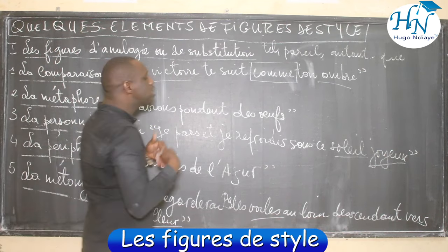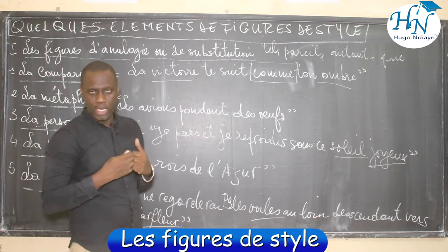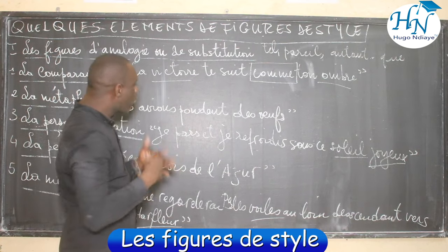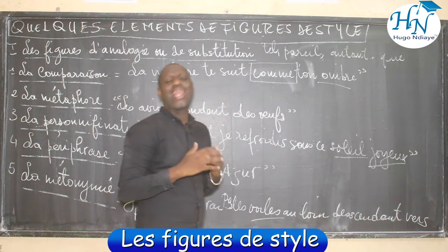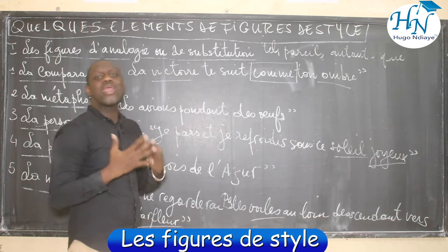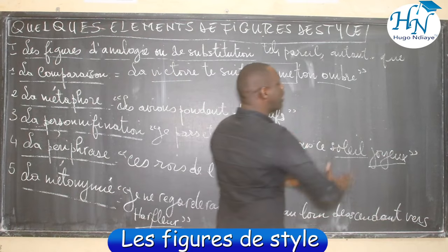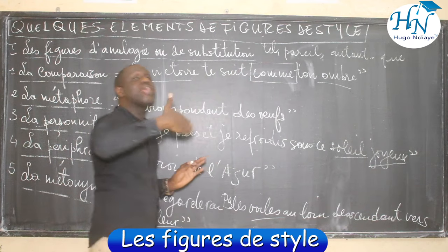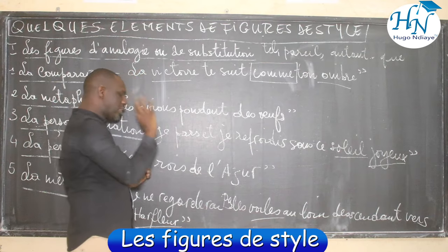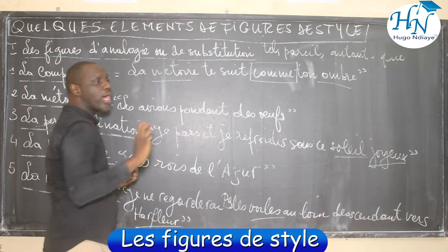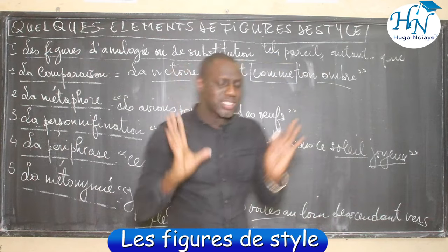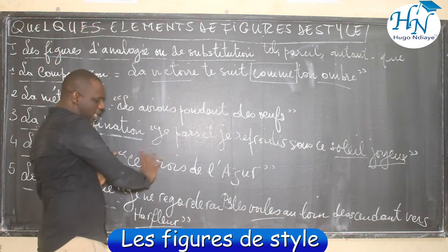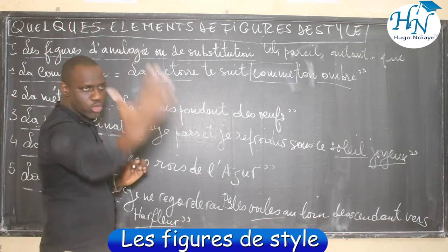Troisièmement : « je pars et je me réchauffe sous le soleil joyeux ». Quelle est la valeur exprimée ? Cette figure exprime l'idée selon laquelle le poète part prendre un peu d'air ou un peu de soleil — autrement dit, il se libère, il va changer les idées. Quand Baudelaire dit avec la périphrase « ces rois de l'azur », la valeur c'est la maîtrise — être roi, c'est être au-dessus, être le prince, être sans maîtresse — c'est la raison pour laquelle il les surnomme les rois de l'azur, faisant allusion aux albatros.